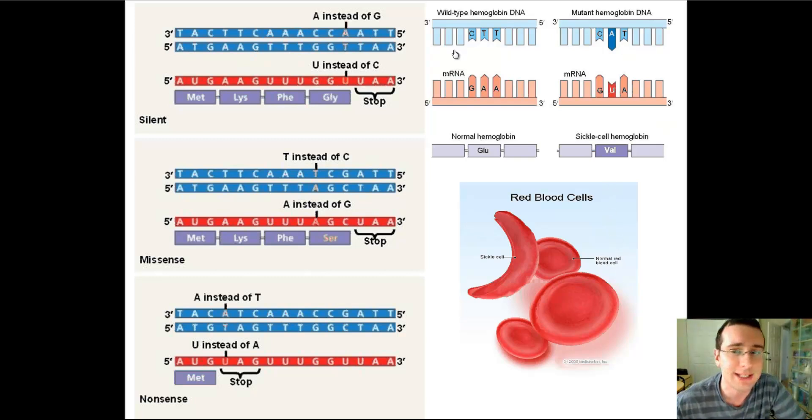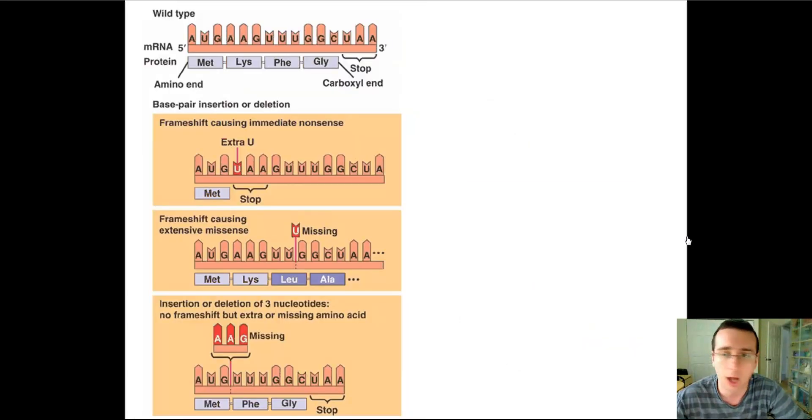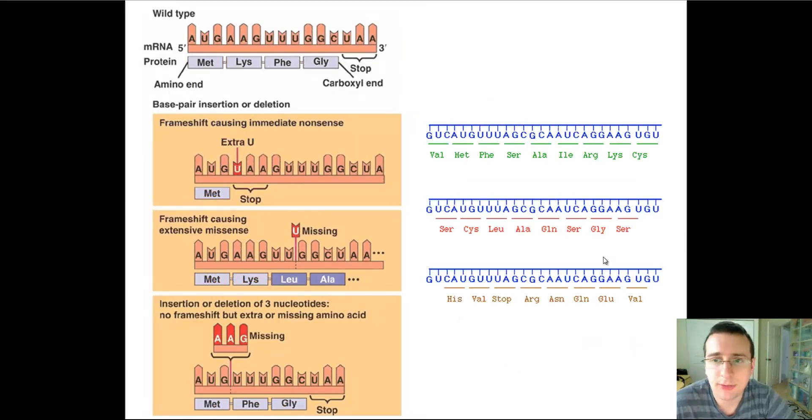That causes the cells to have a sickle cell because the hemoglobin will not be built correctly, and it makes the white blood cells less efficiently carrying actual oxygen throughout the body.